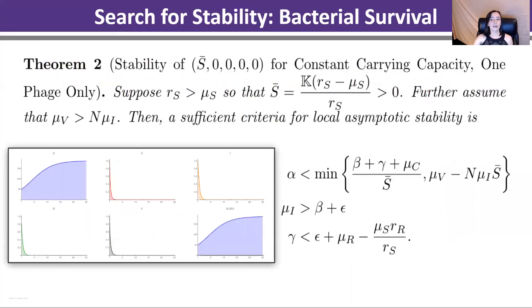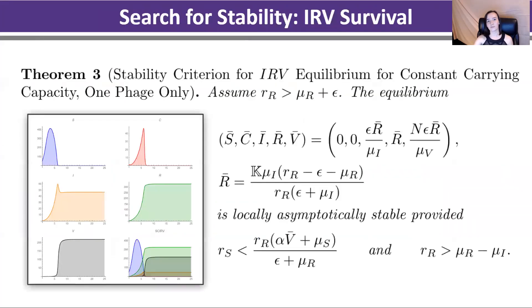A bad case scenario, but not the worst, is if we use the bacteriophage but its infection rate is so low that it's ineffective against the bacteria we're targeting, which means we need to use a different bacteriophage to potentially treat these, and our bacteria survive. The worst case scenario is IRB survival, in which case we use the bacteriophage and it infects the bacteria successfully, but it's mostly lysogenic, which means it's not going to go on to kill the bacteria, and we need to find a different method of treatment.